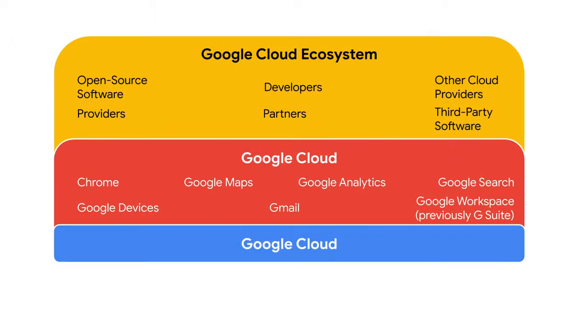Before we start using all of the different services that Google Cloud Platform, or GCP, offers, let's talk about what GCP is. When you look at Google Cloud, you'll see that it's actually part of a much larger ecosystem. This ecosystem consists of open source software, providers, partners, developers, third-party software, and other cloud providers. Google is actually a very strong supporter of open source software.